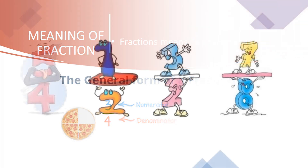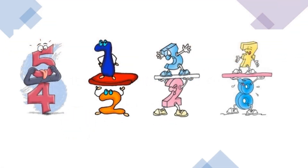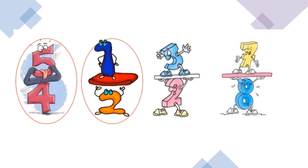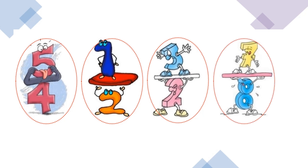These are some more examples of fractions. 5 upon 4 means out of 4 equal parts you are taking 5 parts. 1 by 2, simply half, means out of 2 equal parts you are taking 1 part. 3 upon 2 means you are making 2 equal parts and taking 3 parts. 7 upon 8, or 7 by 8, means out of 8 equal parts you are taking 7 parts.